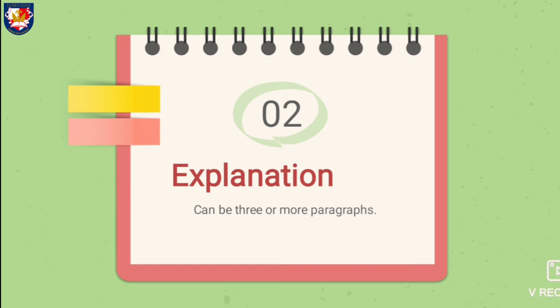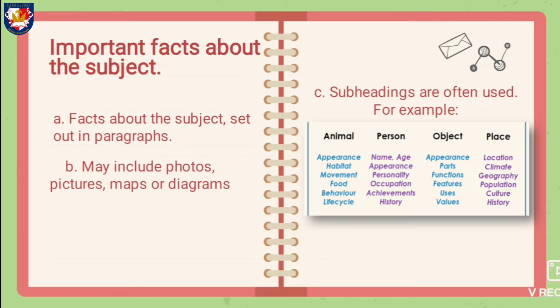Part 2 is explanation. It can be three or more paragraphs. Explanation covers important facts about the subject. There are three things you can write in this part: A. Facts about the subject set out in paragraphs. B. May include photos, pictures, maps, or diagrams. C. Subheadings are often used.